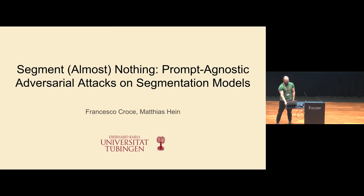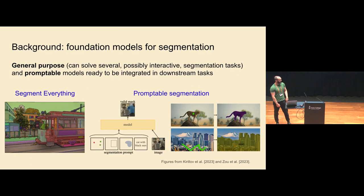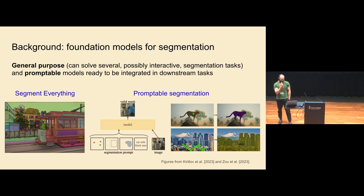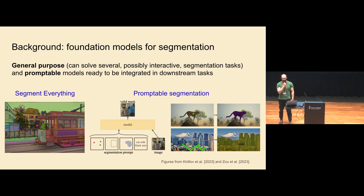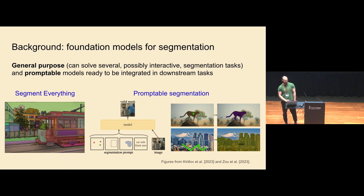We have heard about adversarial attacks in the previous two talks. Most of the works, at least in computer vision, on adversarial attacks are on image classifiers — you have some image and you want to decide what's inside. But another very important task in computer vision is segmentation, where you have an image and you want to segment some objects. There are several variations of these tasks, and we can think about adversarial attacks on these tasks too.